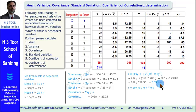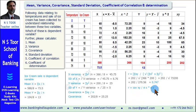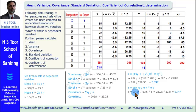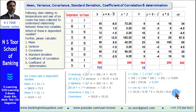Correlation can also be calculated using another formula: r equals covariance(xy) divided by standard deviation of x multiplied by standard deviation of y. Covariance(xy) is 25.25, standard deviation of x is 6.76, and standard deviation of y is 5. Using these already-calculated values, we get the same result.